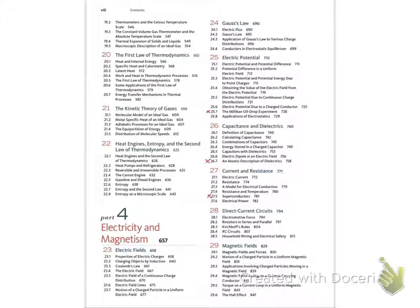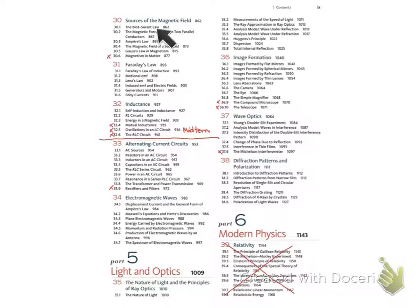We will study the phenomena that appear when the charge moves or when we have current. When the charge moves, we not only get the current but we also get the magnetic field. So we will study the magnetic field and the source of the magnetic field. For the last two chapters of the first half, we will study the induction of the electric field from the magnetic field, which is very important in electromagnetic theory.